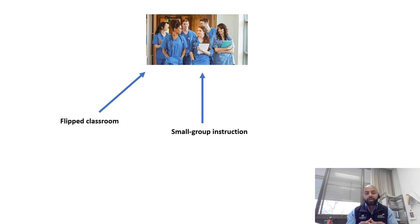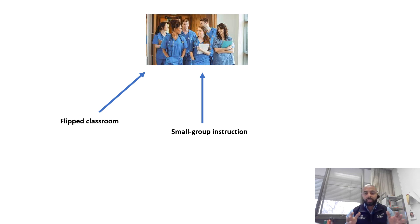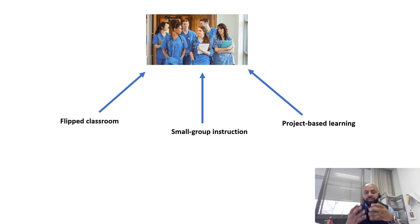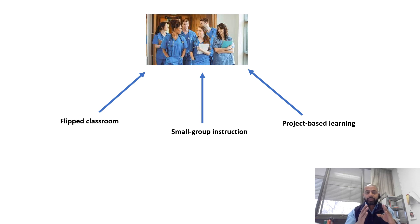The second model is small group instruction, where you separate a bigger class into smaller groups to see what happens when you teach a smaller group compared to a bigger class. The third model is project-based learning, where students are asked to engage in projects to get the most out of what is delivered in the classroom. So you have a classroom divided into three groups, each subjected to a different teaching model.